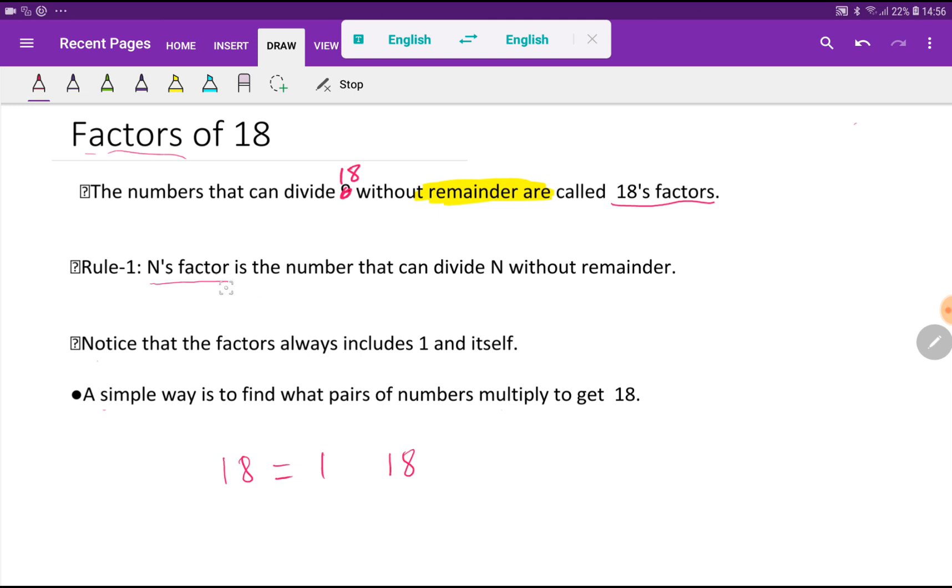This is the general rule: what is a factor? The number N's factor is the number that can divide N without remainder. Notice that the factors always include 1 and itself, so 18 will have the factor 1 and 18 according to this.